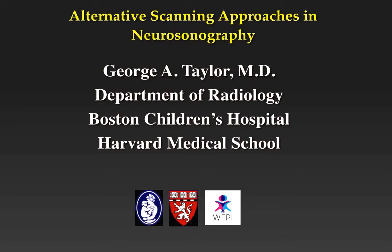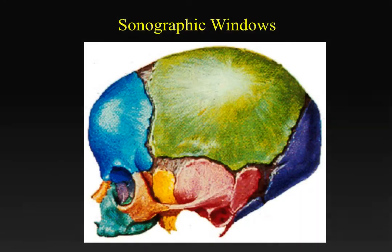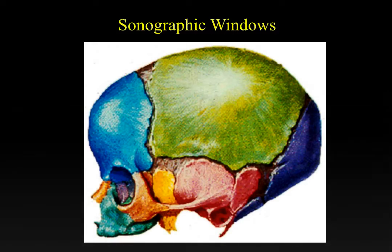This talk addresses the alternative scanning approaches possible in neurosonography as a way of expanding the diagnostic capacity of ultrasound and as a problem-solving tool. Most standard craniosonography is performed through the anterior fontanelle using a sagittal and coronal approach. However, there are a number of other imaging portals that will allow us to look at relatively hidden areas of the brain, including the posterior fossa, that are not adequately addressed using the anterior fontanelle.